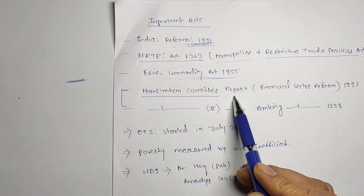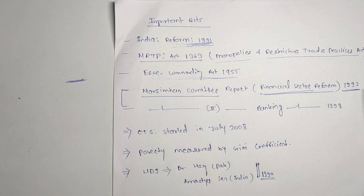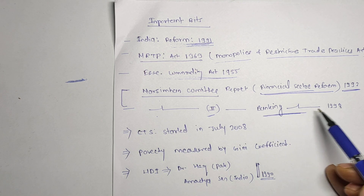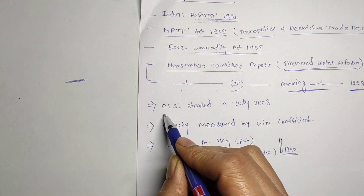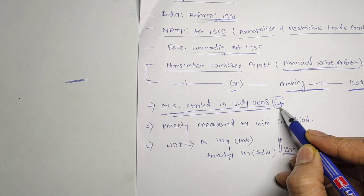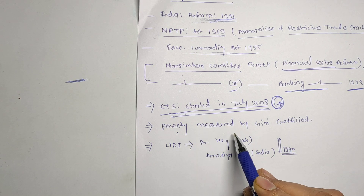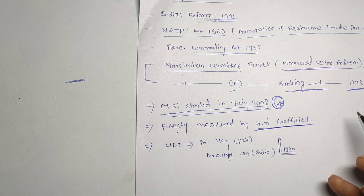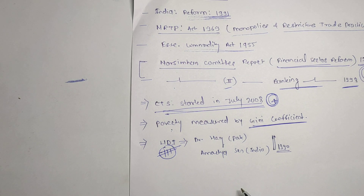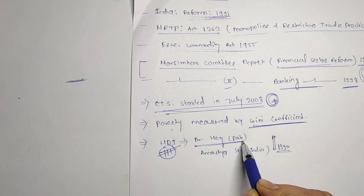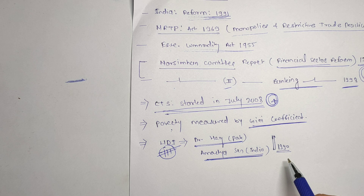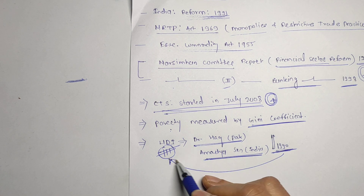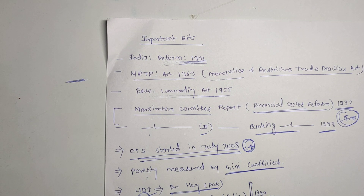Important bits: Narasimham Committee first report — on financial sector reform, 1992. Narasimham Committee second report — on banking reform, 1998. That is the most expected MCQ from this chapter. Also remember: CTS was started in July 2008. Poverty is measured by the Gini Coefficient. HDI — Human Development Index — was mainly contributed to by Dr. Haq from Pakistan and Amartya Sen from India, who evaluated this index around 1990.